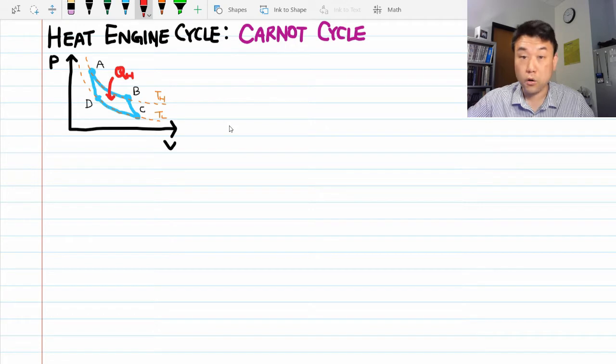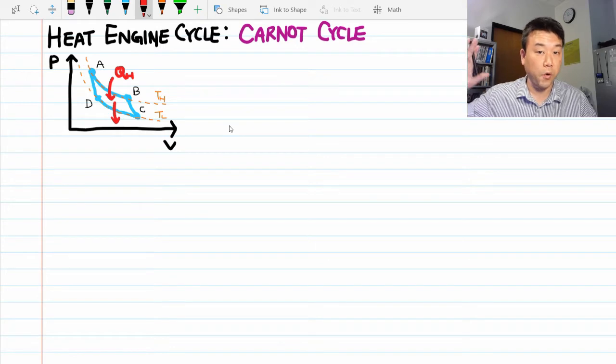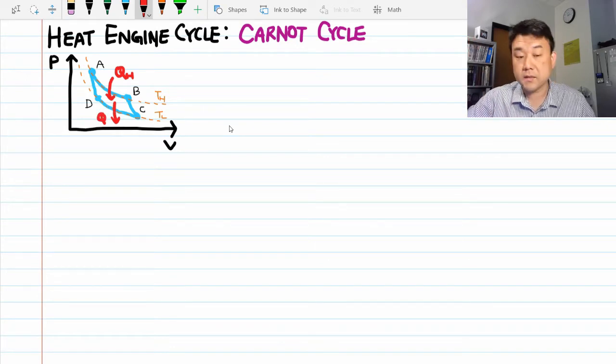And along the isothermal compression, C to D, there's going to be heat outflow from the gas, so that once again the temperature will remain constant while work is being done on the gas. And since the heat exchange from D to A is zero again, we can call this QL, our heat outflow.